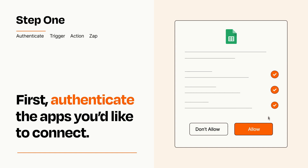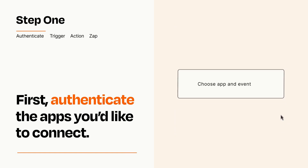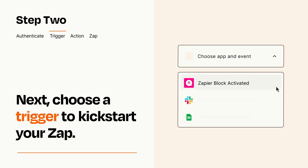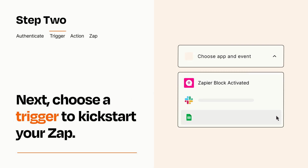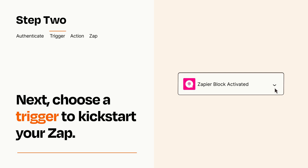Zapier meets industry standards for encryption when connecting with each of your apps. Now let's set up your trigger, which is the event that starts your Zap. Pick the trigger event that you want from the list. When you set up this step, your Zap will pull in test data from your trigger app that you'll see later when setting up your action app.